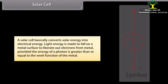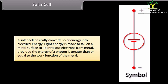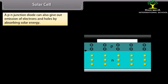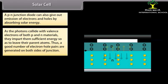Solar cell: A solar cell basically converts solar energy into electrical energy. Light energy falls on a metal surface to liberate electrons, provided the energy of a photon is greater than or equal to the work function of the metal. A P-N junction diode can also emit electrons and holes by absorbing solar energy. The P material at the top is very thin, so solar energy photons easily penetrate to both sides of the junction, colliding with valence electrons.